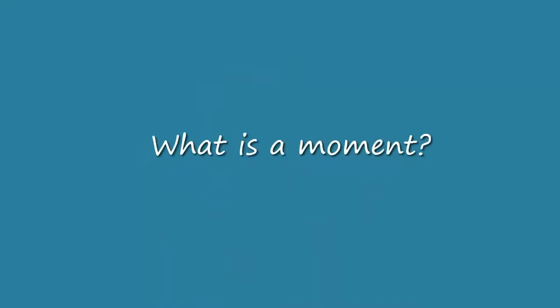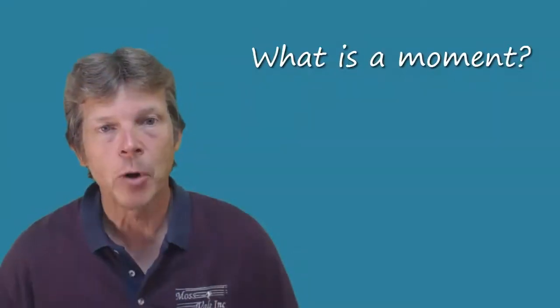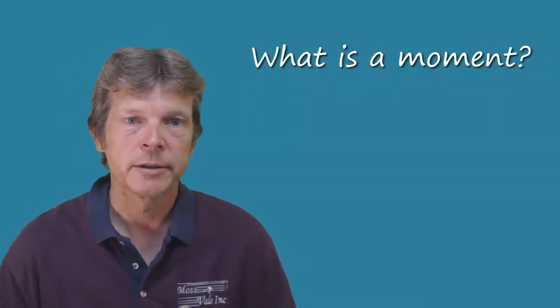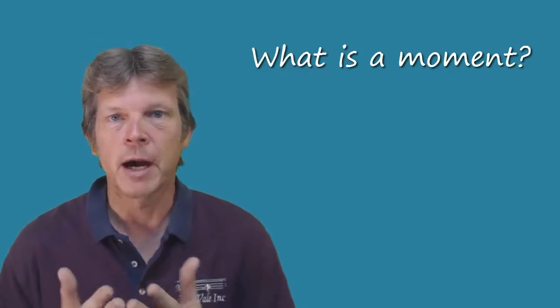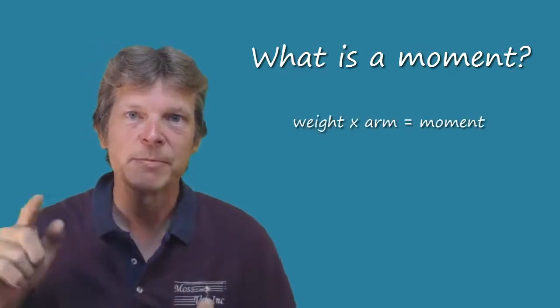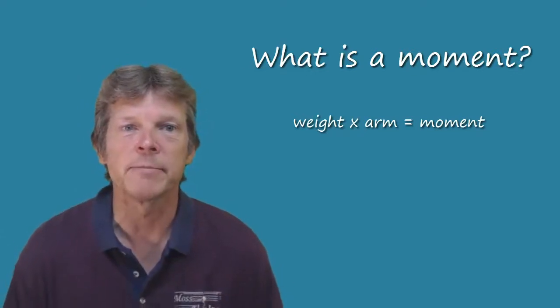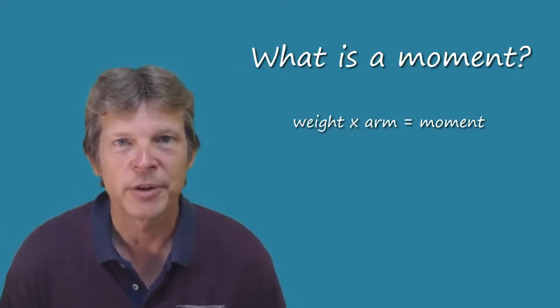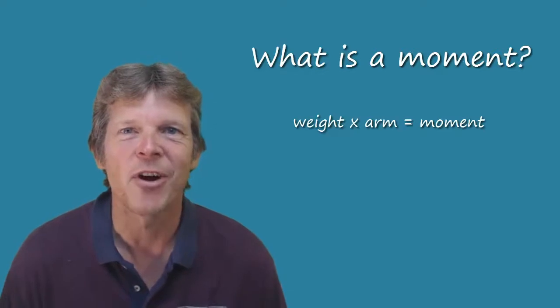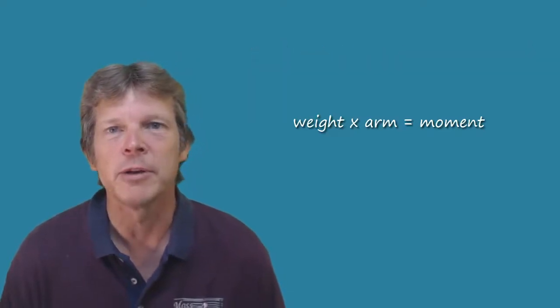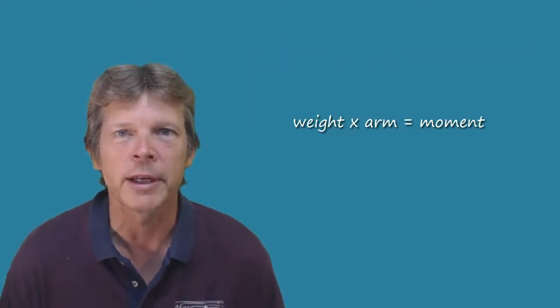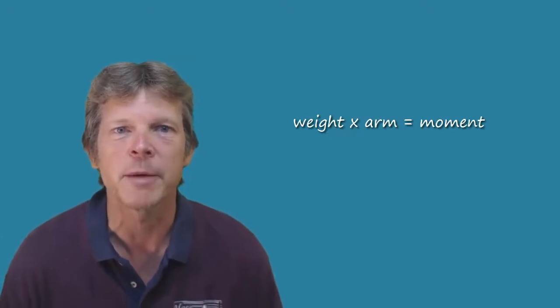Moment. The moment is the product of the weight multiplied by the arm. Weight times arm equal moment. Now, if you only remember one thing in weight and balance, remember this formula. Weight times arm equal moment. You're going to be using this formula over and over again. It's a very simple formula. Weight times arm equal moment.